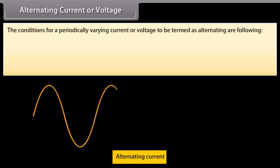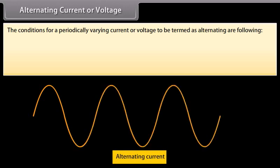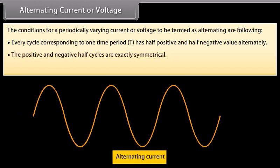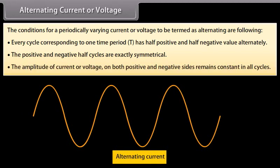The conditions for a periodically varying current or voltage to be termed as alternating are: every cycle corresponding to one time period has half positive and half negative value alternately. In case of current, the direction of current reverses after every half cycle. In case of voltage, the polarity of potential difference reverses after every half cycle. The positive and negative half cycles are exactly symmetrical, and the amplitude remains constant in all cycles.